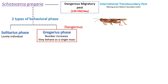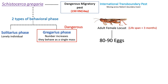An adult female locust can lay 80 to 90 eggs. If it is not controlled, a swarm grows up to 40 to 80 million locusts per square kilometer of land area.